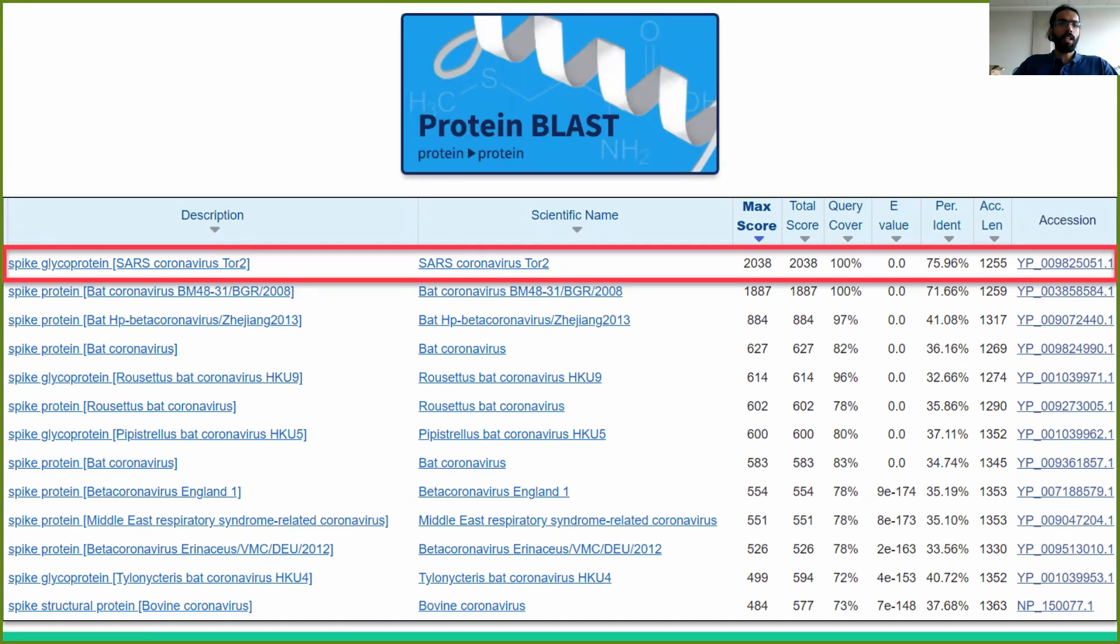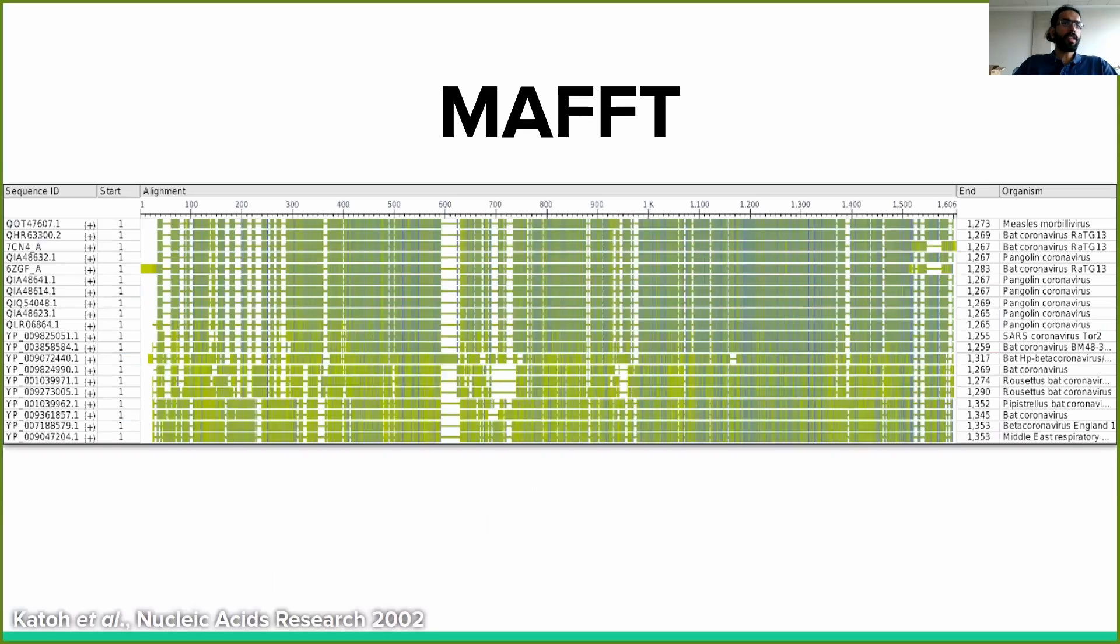Once we have obtained our collection of S-protein sequences, we can use math to perform multiple sequence alignment or MSA on them. In this visualization, white spaces represent gaps and shades of green represent matches and mismatches. The darkest green represents an exact match to the most frequent amino acid in a given column and lighter shades of green represent mismatched amino acids that are increasingly different from the most frequent amino acid with respect to biochemical properties.